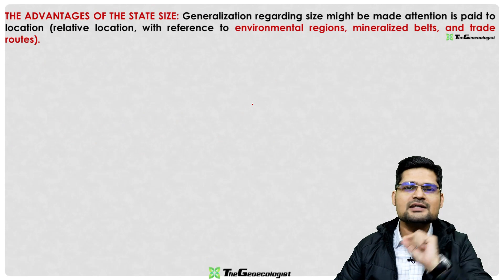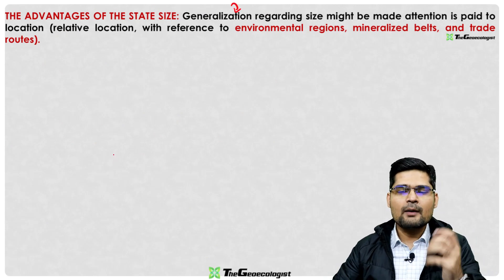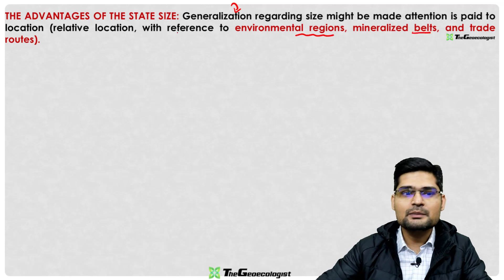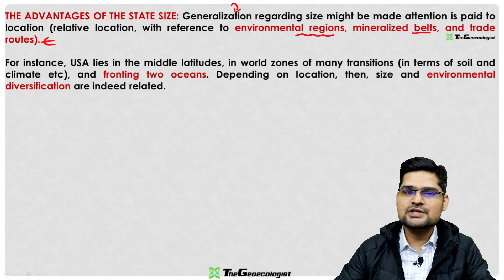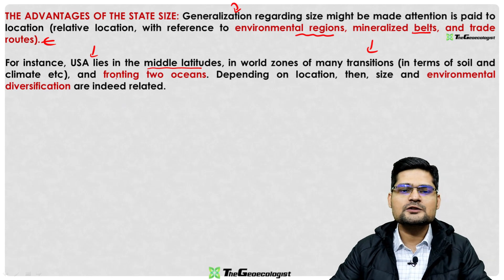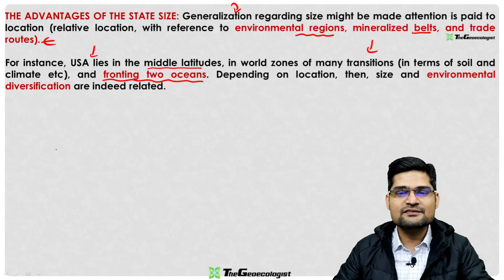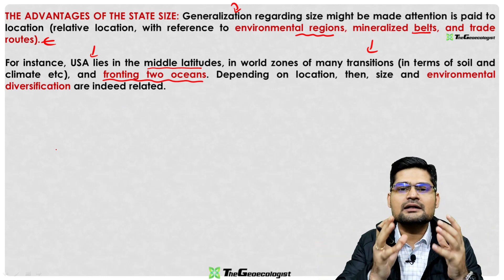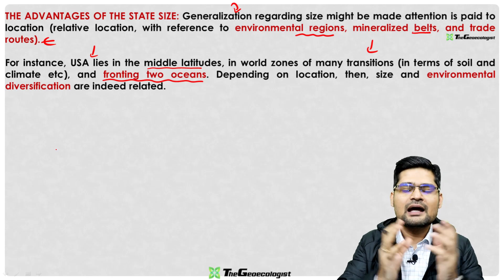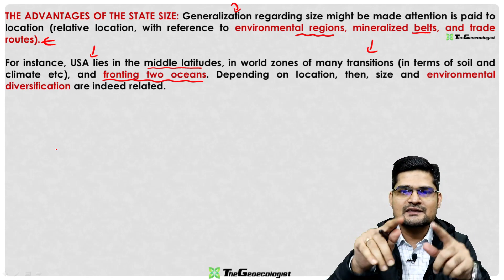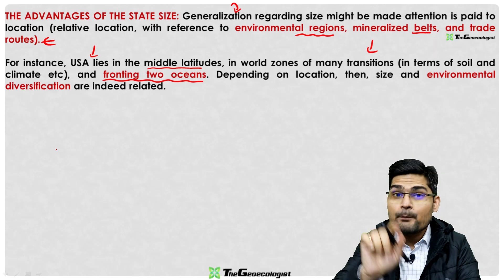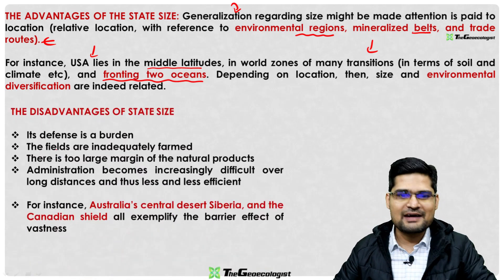A basic generalization is that large states have advantages in terms of location, environmental regions, mineral belts, and trade routes. For instance, the USA lies in the middle latitudes, has many climatic transition zones, and fronts both the Atlantic and Pacific Oceans, giving it wider outreach and geostrategic protection — as also discussed in heartland and rimland theories.